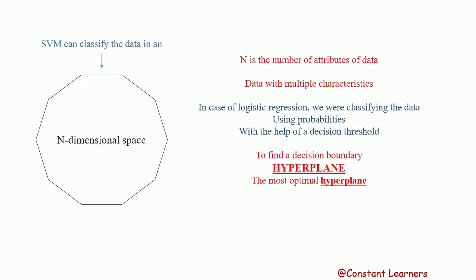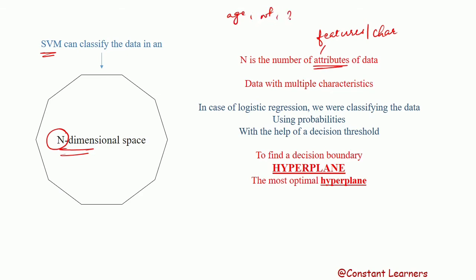Support vector machine can classify the data in an n-dimensional space, where n represents the number of attributes of data. Attributes means features or characteristics of data — like age, weight, height, color — there can be multiple characteristics. So support vector machine can classify data that has multiple characteristics.